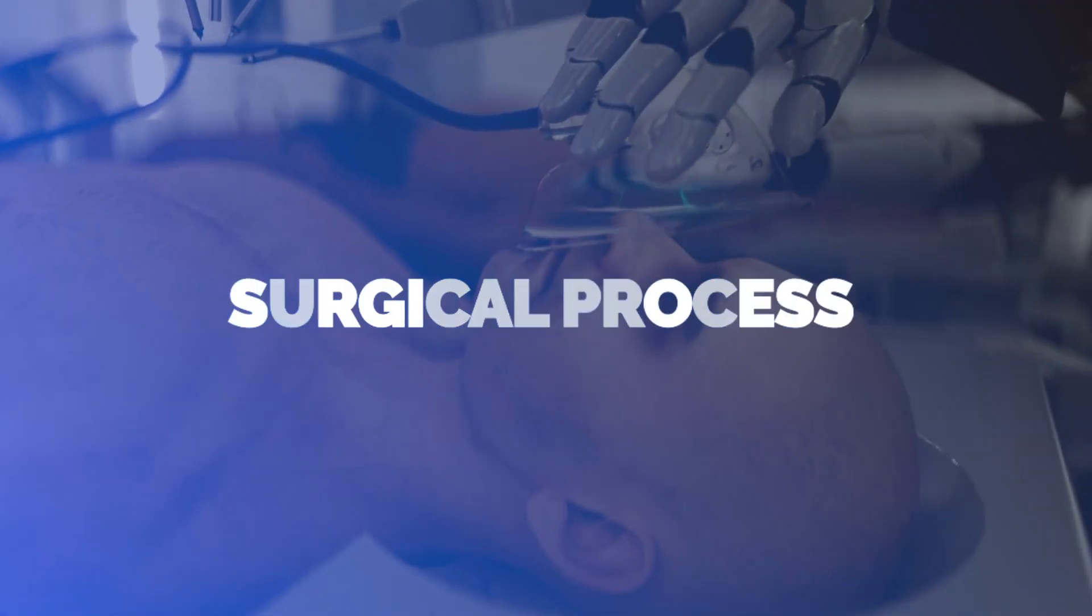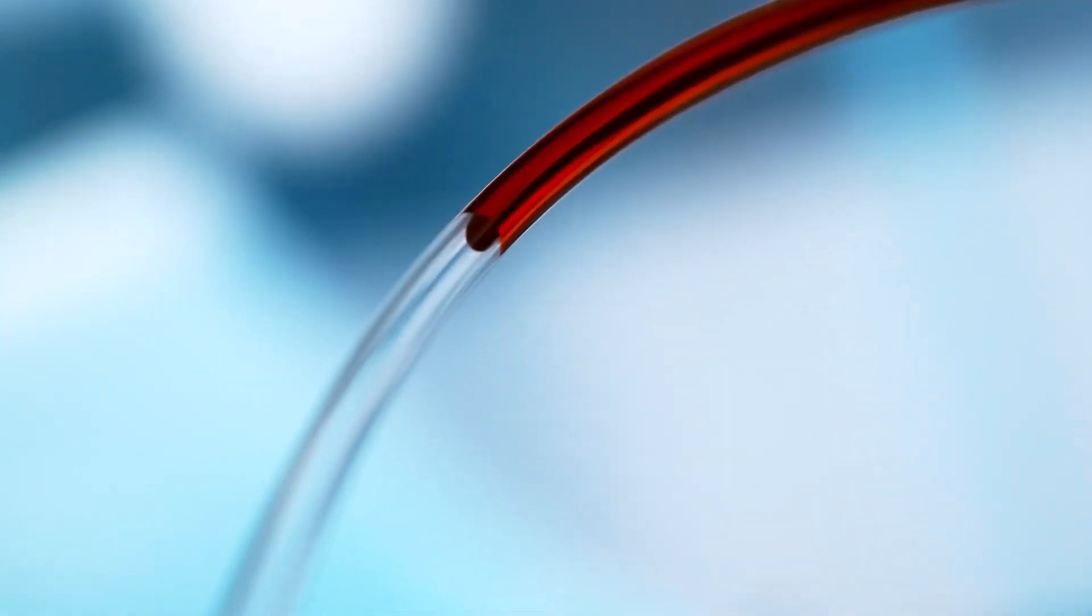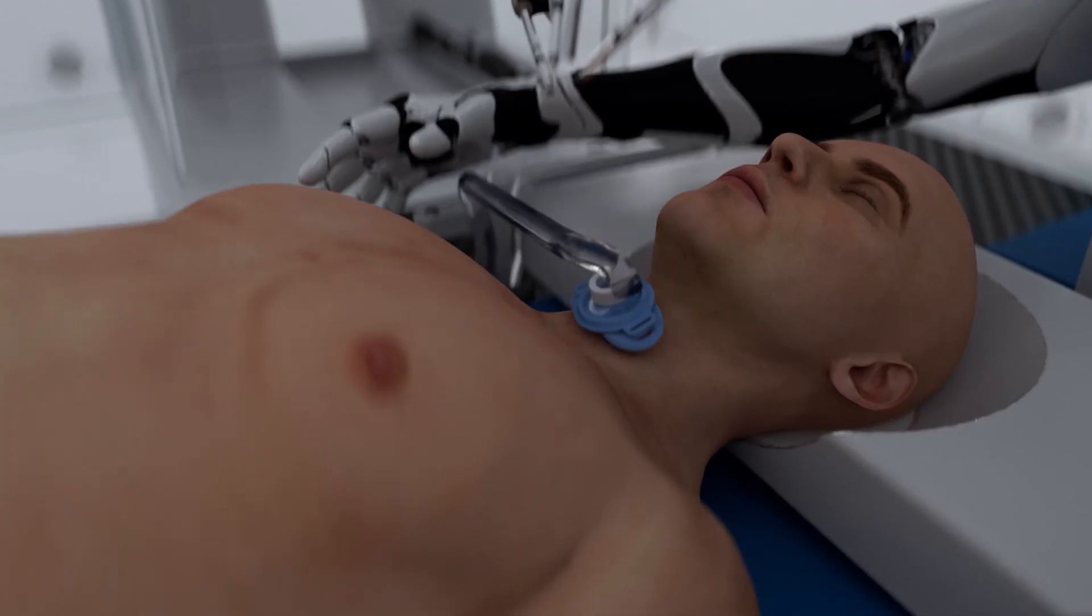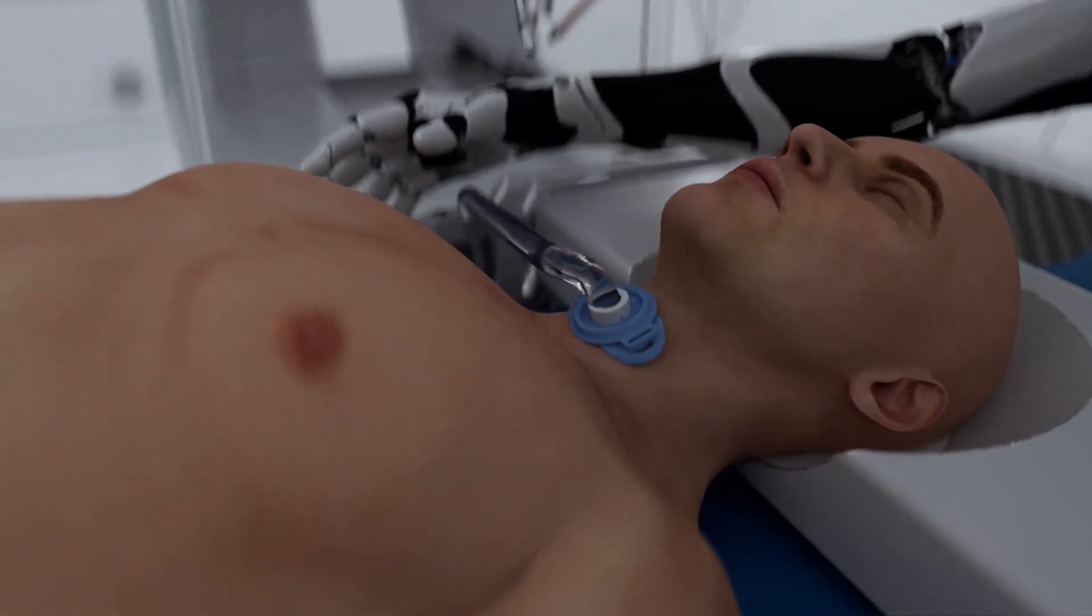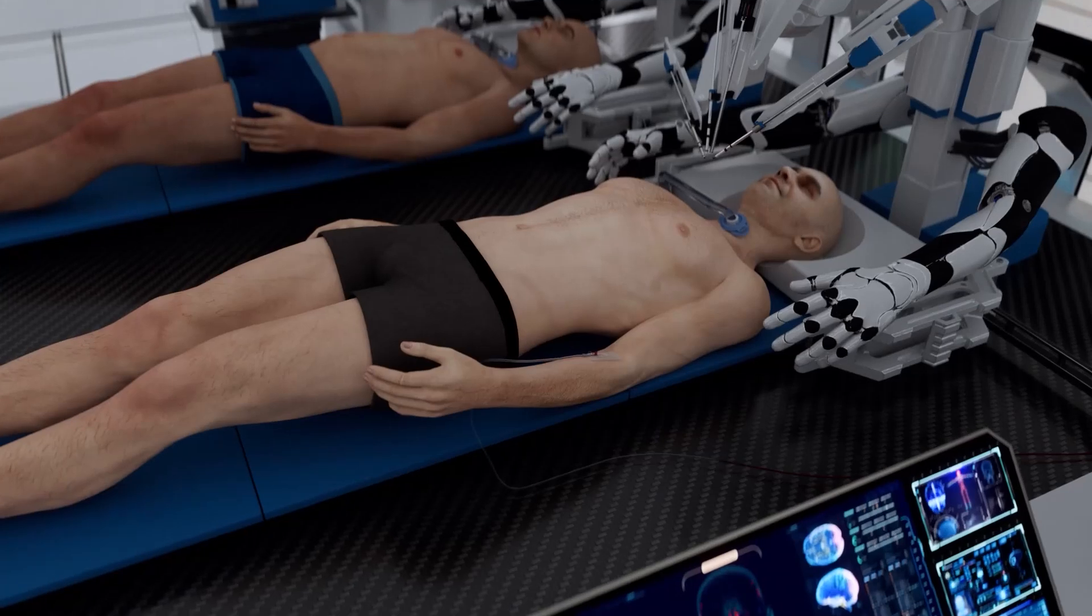Chapter 3: Surgical Process. The procedure begins by preparing the donor and recipient bodies. The donor, a brain-dead patient with a functional body, and the recipient, a patient receiving the transplant, are administered general anesthesia and undergo tracheotomy to provide respiratory support.